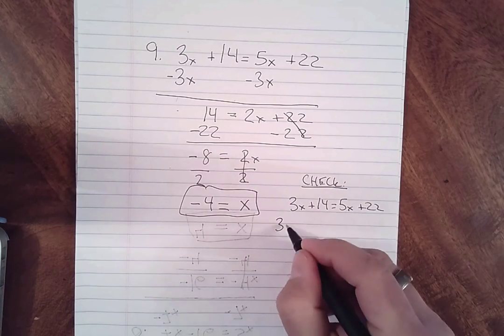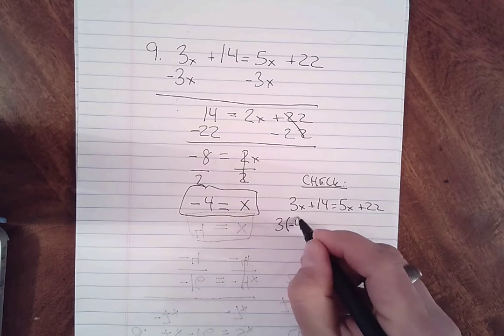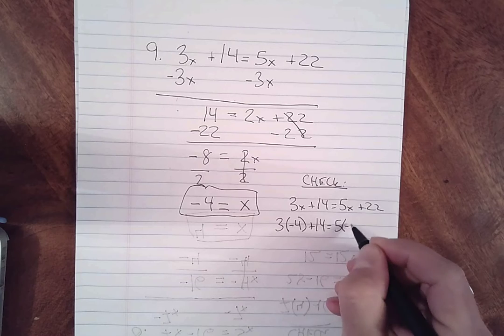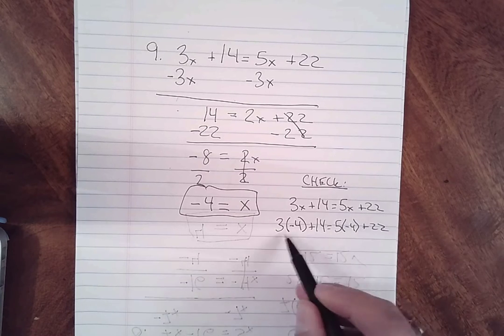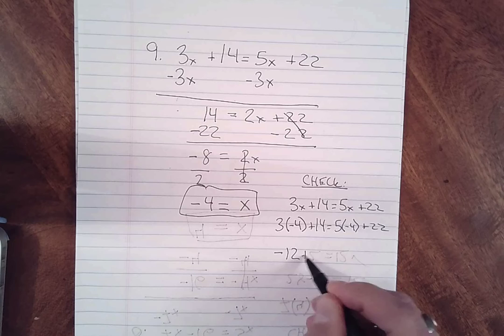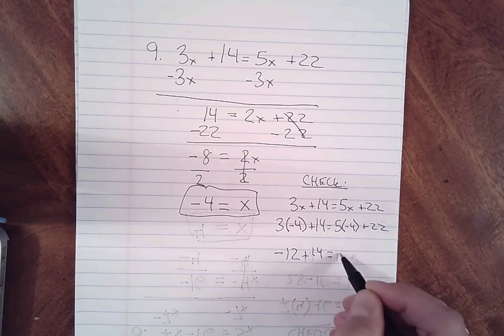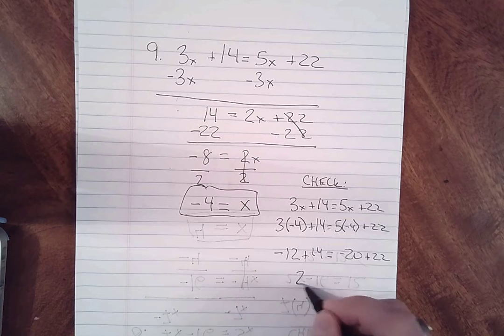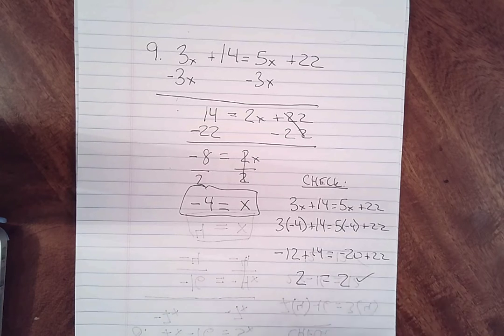So we have 3 now times negative 4 plus 14 is equal to 5 times negative 4 plus 22. So we have a negative 12 plus 14 is equal to a negative 20 plus 22, or 2 is equal to 2. That checks.